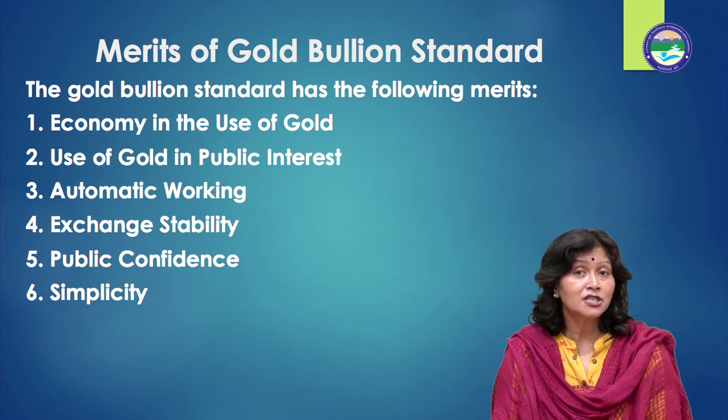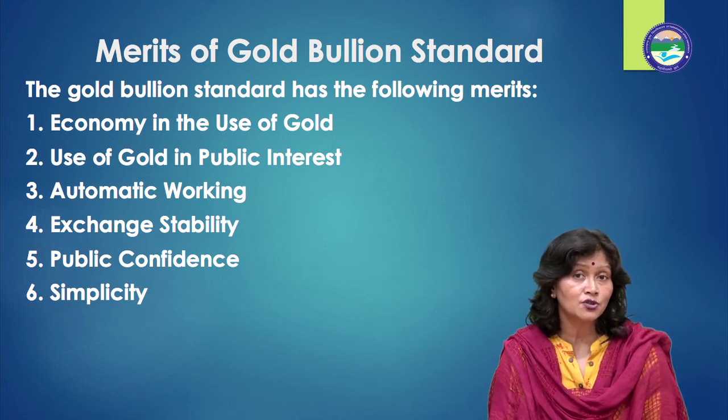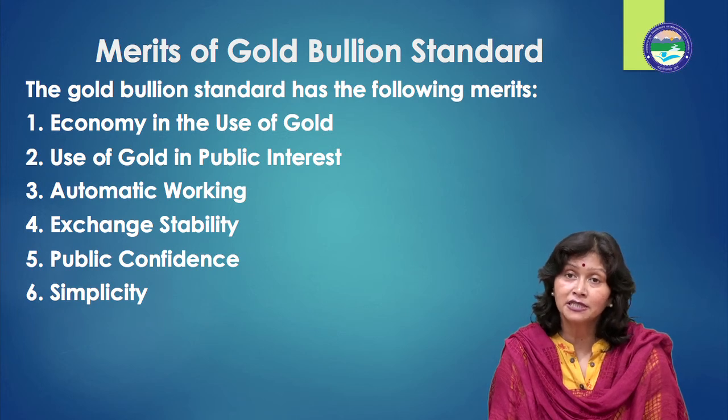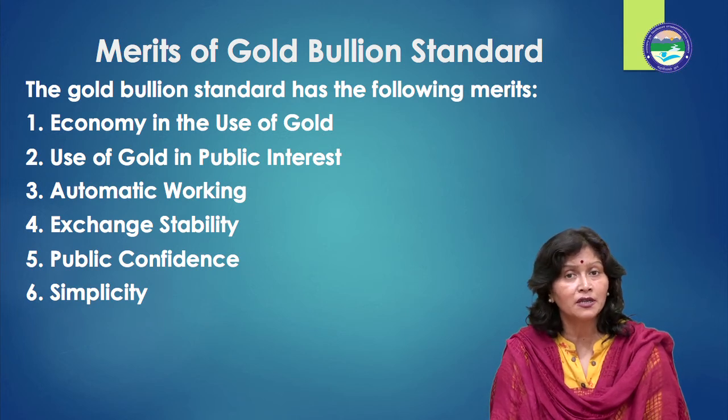Demerits of gold bullion standard: number one, it is not automatic — this standard does not work automatically and needs active government intervention; it may be more appropriately called a managed standard. Number two, it is inflation-oriented — under this system, money supply can be increased easily because it is very difficult to reduce money supply, hence it is prone to inflation. Number three, it is expensive — the government has to keep large reserves which involves lots of expenditure. It is due to its expensive nature that India abandoned this system on the recommendation of the Hilton Young Commission.